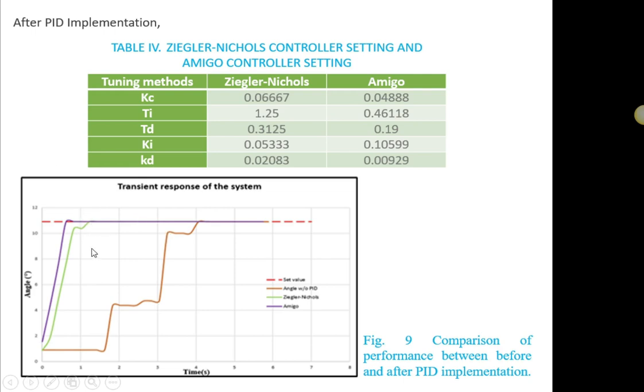I mean from this figure here, we can see that the Ziegler-Nichols method has no overshoot, which is better than the Amigo tuning method that has at least 0.13% overshoot here. However,